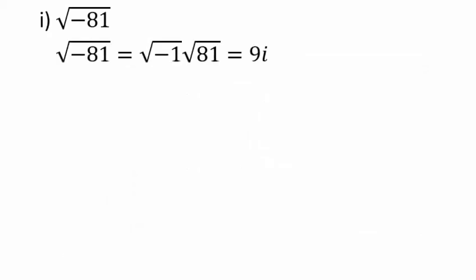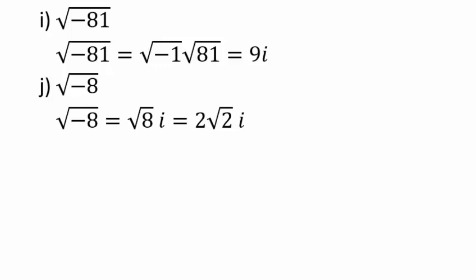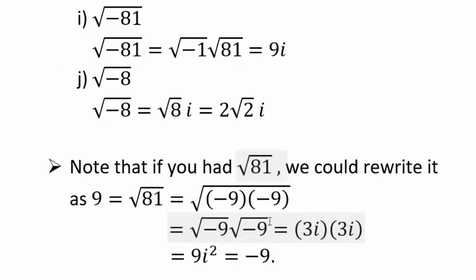For square roots of negatives: √(-81) = √(-1)·√81 = 9i. Similarly, √(-8) = √8 · i = 2√2 · i. It's important not to multiply two negative square roots without first converting to i form. For example, √(-9)·√(-9) ≠ √((-9)(-9)) if separated incorrectly — you'd get -9 rather than the correct answer of 9. You can only separate square roots when the numbers inside are positive.